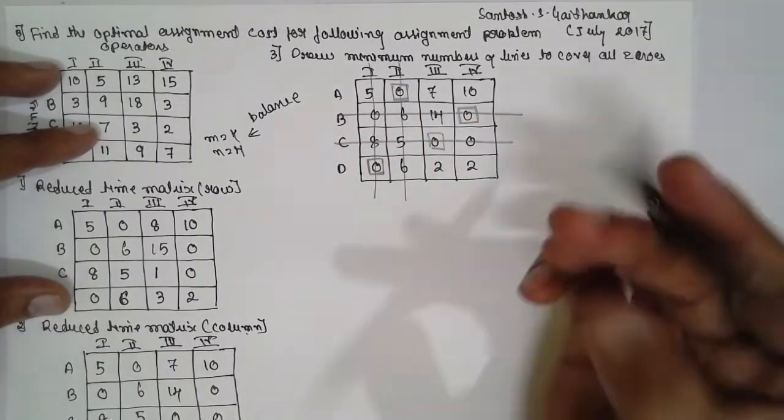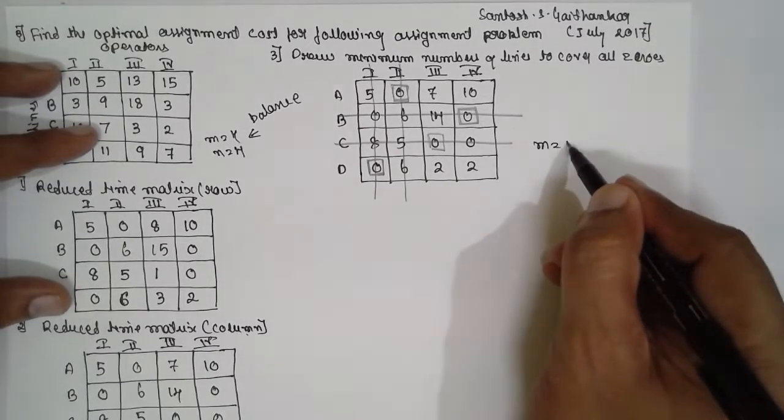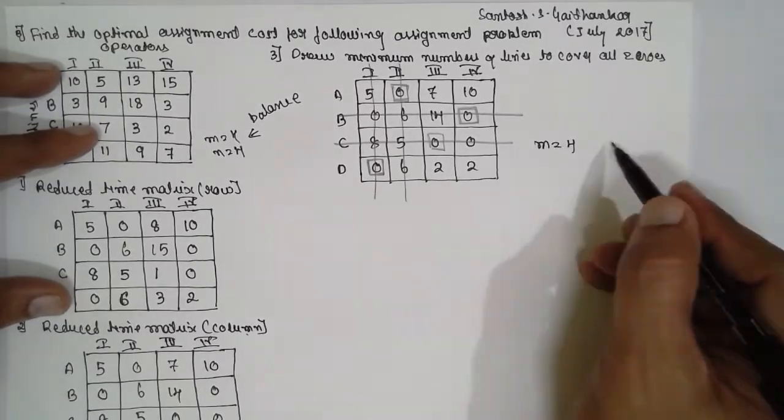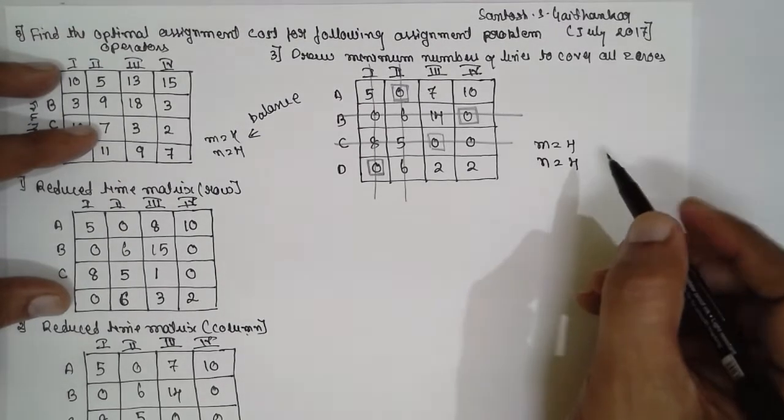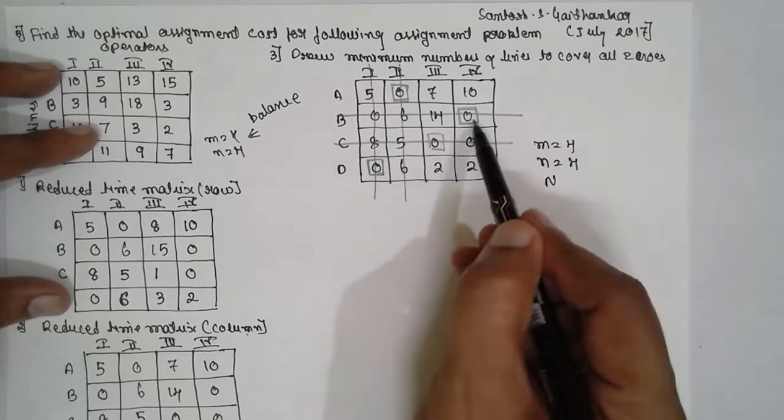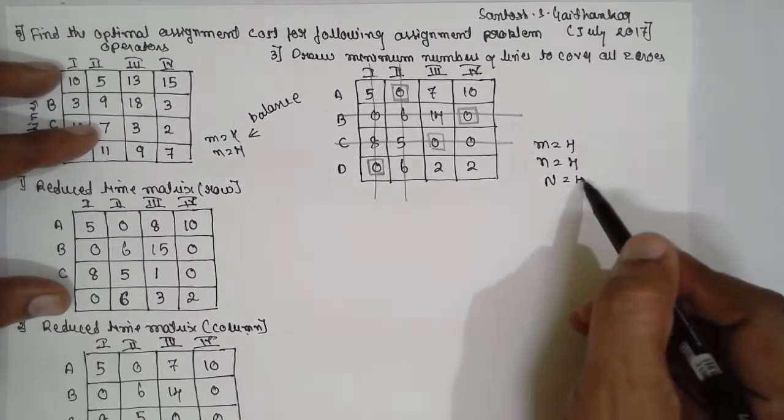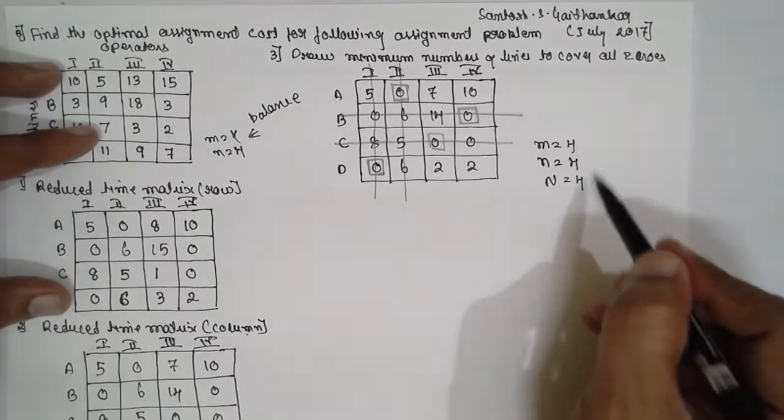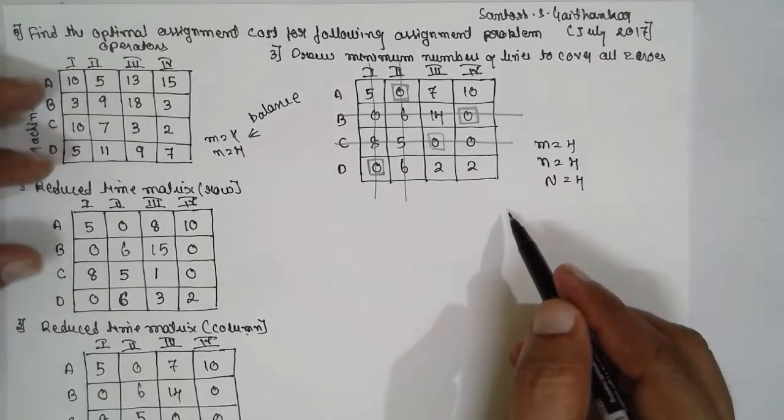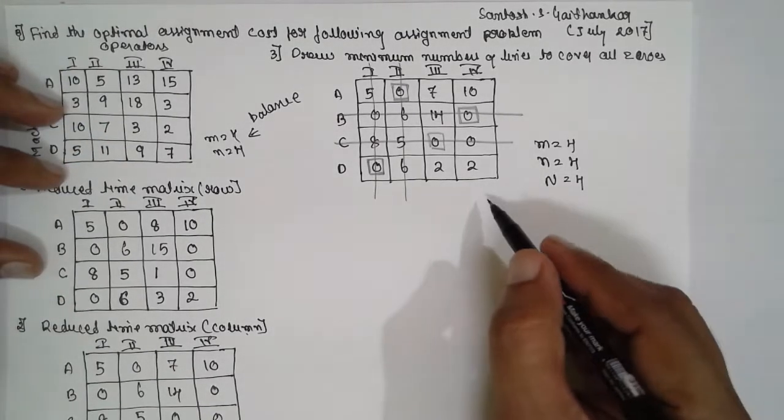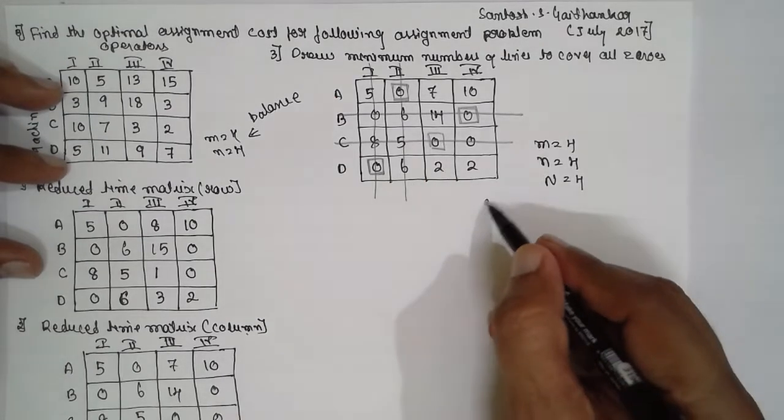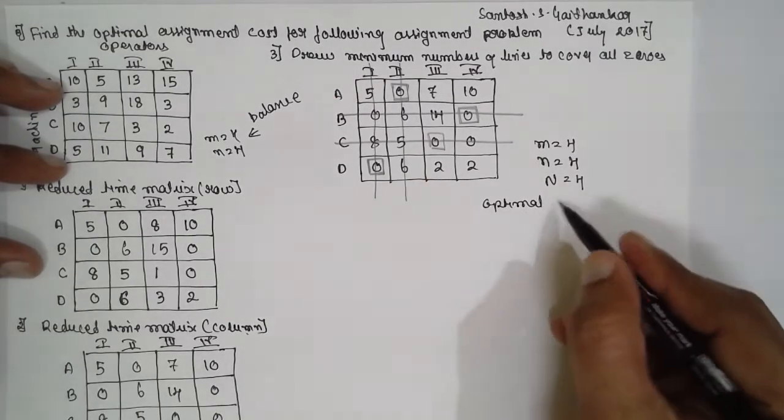That means here, m is equal to 4, that is, m indicates row. Small n indicates column, which is also 4. Capital N is equal to assigned values: 1, 2, 3, 4. There are 4 assigned values. If everything is equal, then we call it as optimal assignment. This is the optimal assignment.